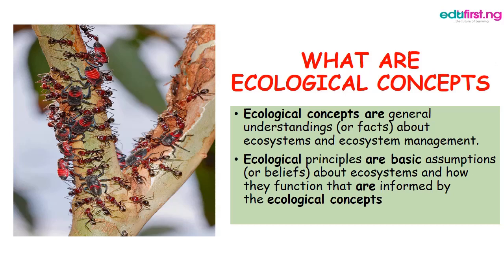Ecological concepts are general understandings — they are facts about ecosystems and ecosystem management. This means that ecological concepts are the general facts about ecosystems: the information and knowledge about ecosystems and how ecosystems can be managed by humans. Ecological principles are based on assumptions or beliefs about ecosystems and how they function, and they are informed by the ecological concepts.